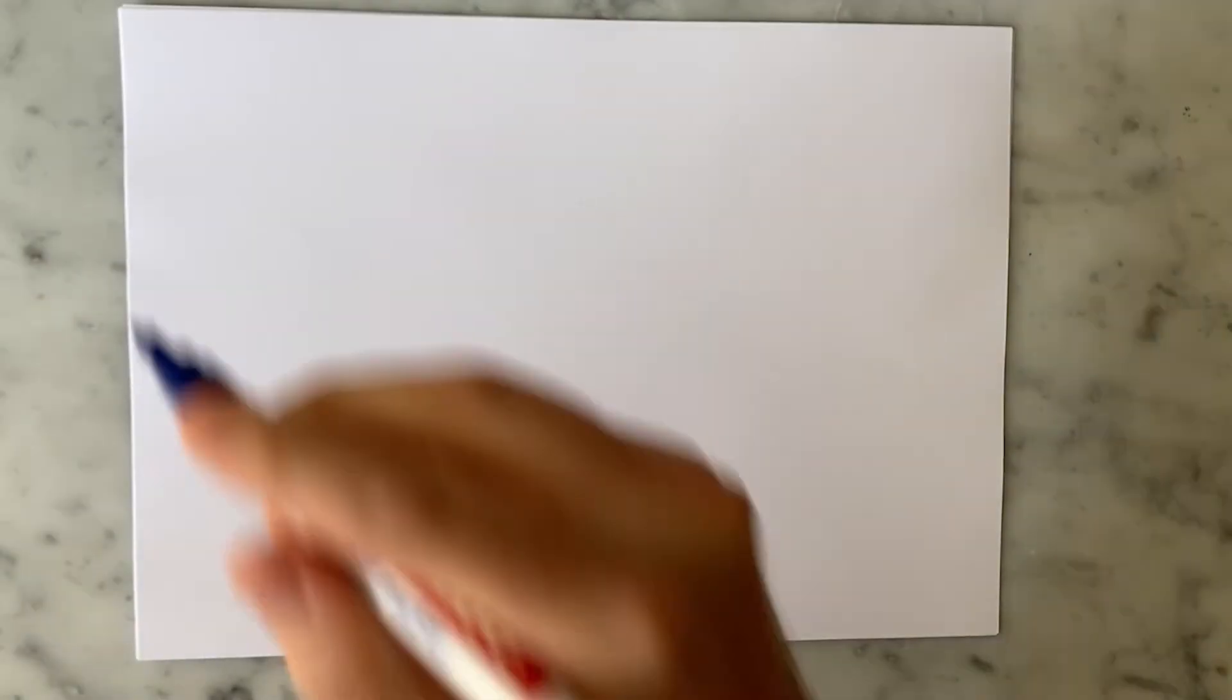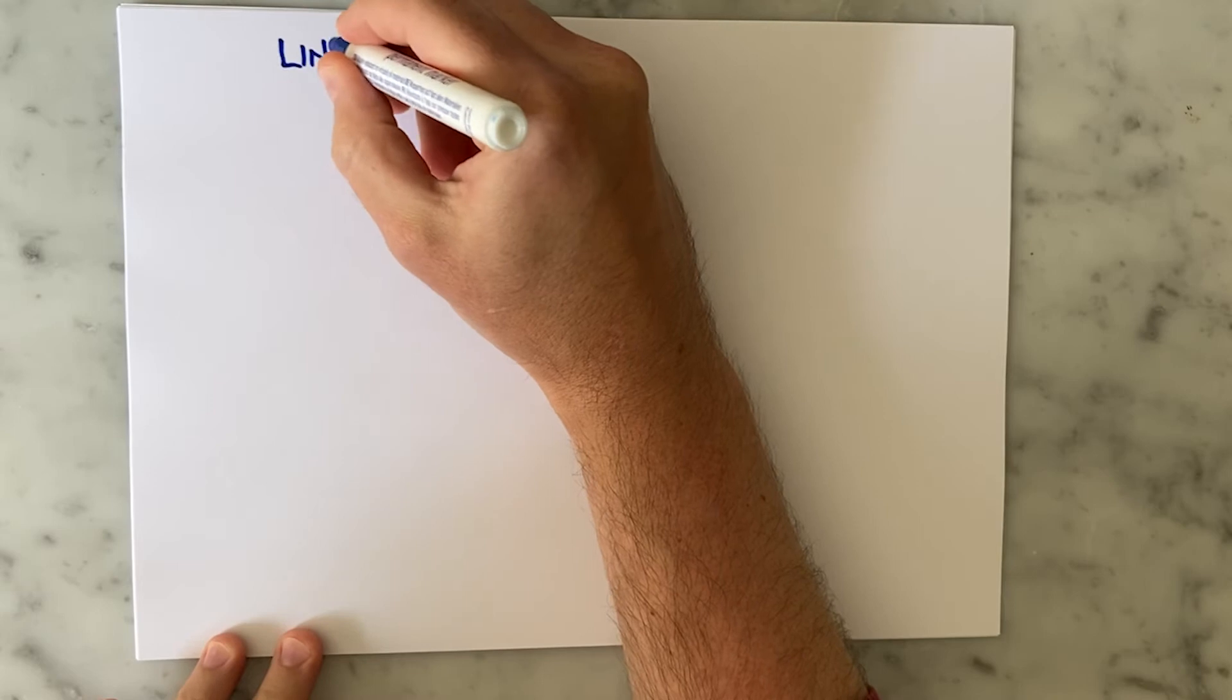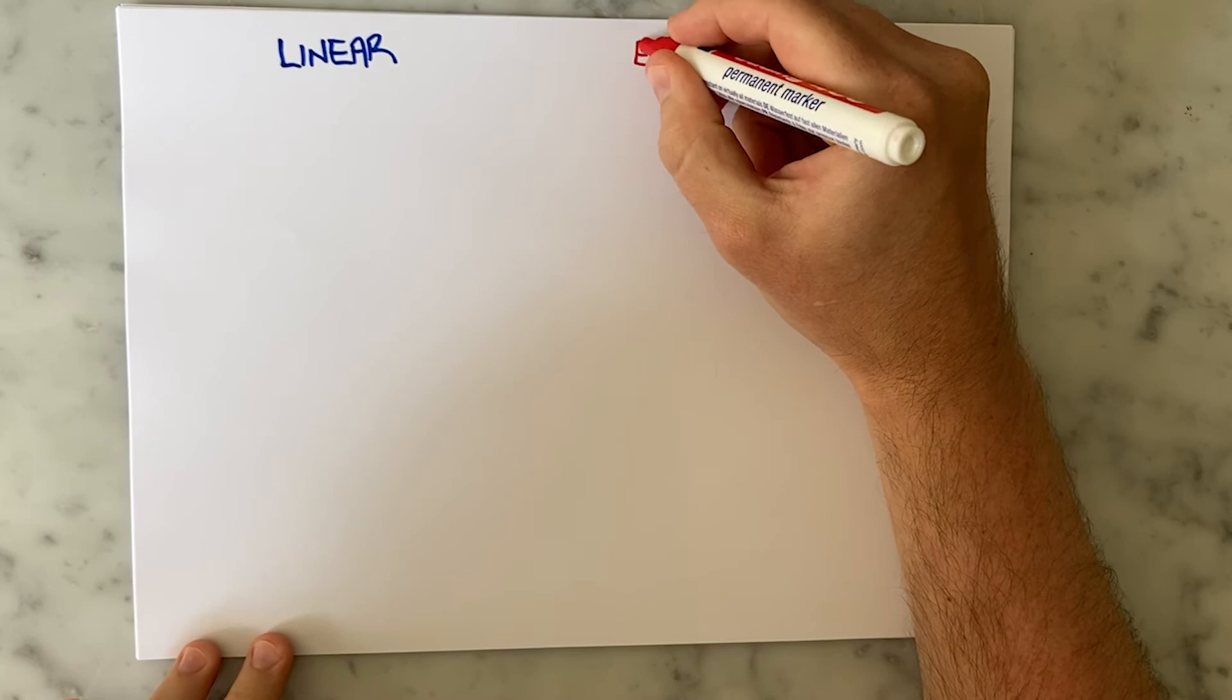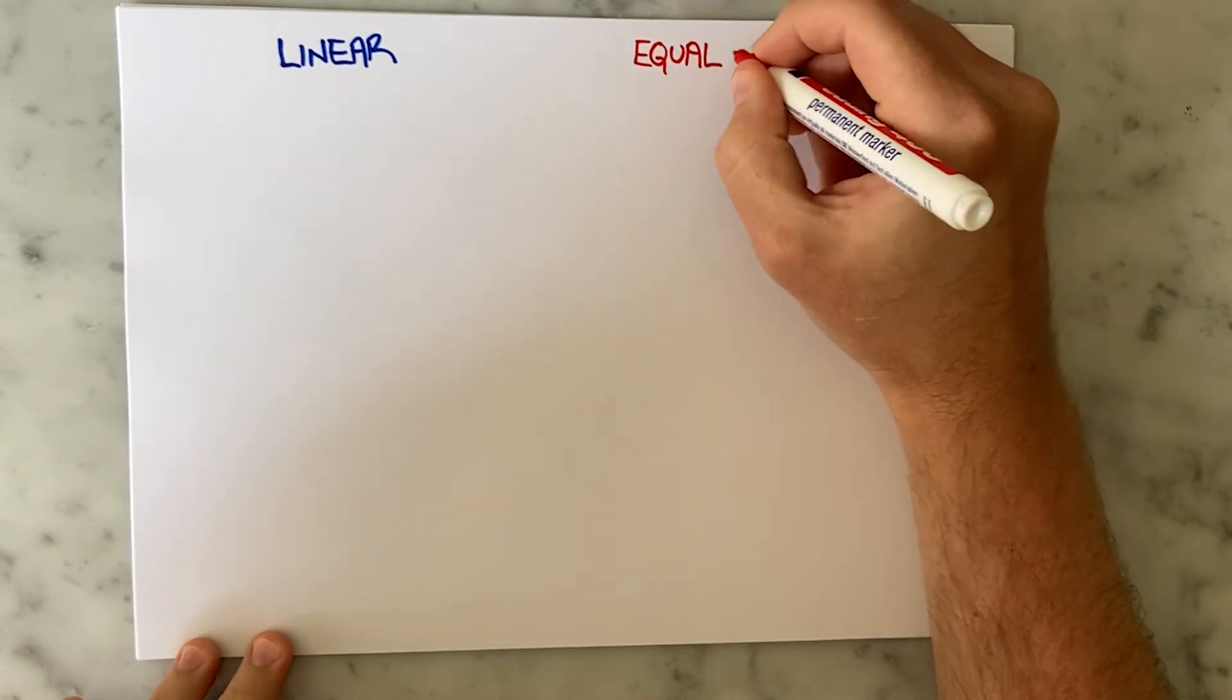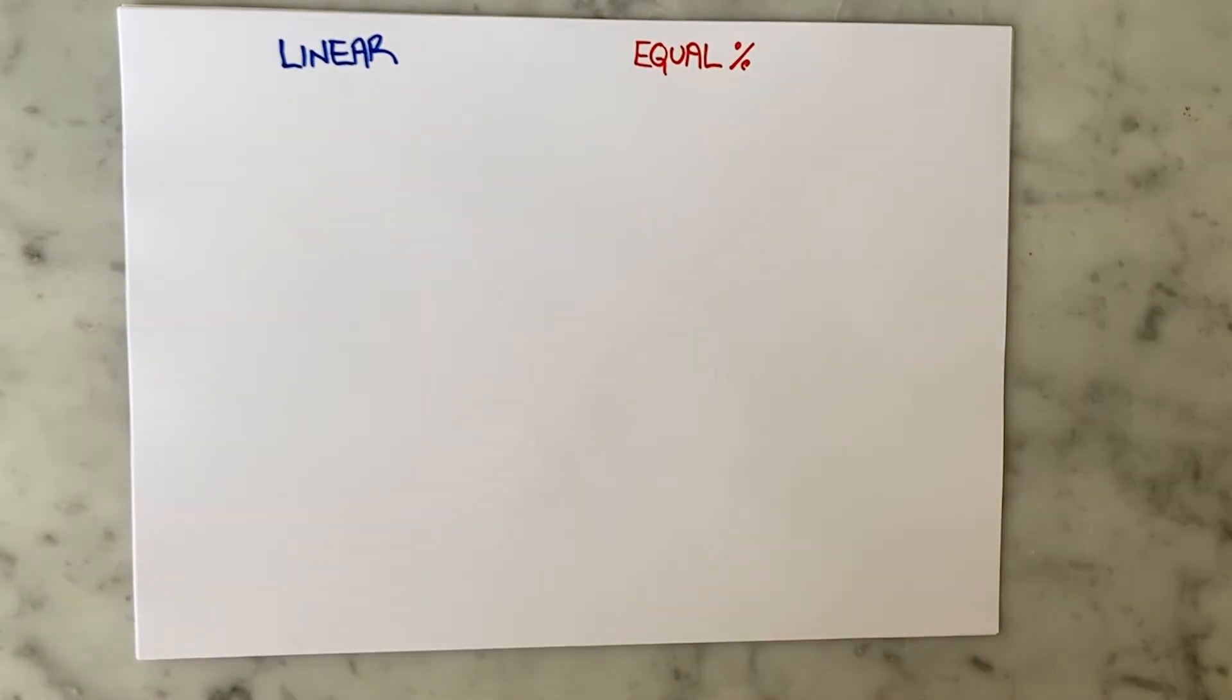To understand the difference between a linear valve and an equal percentage valve, we are going to look at how the behavior changes even though the valves have the exact same starting point. Imagine I have two valves.